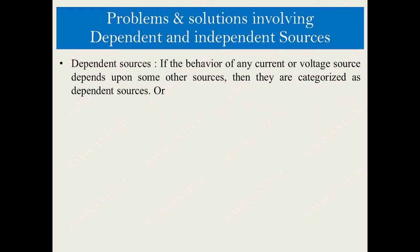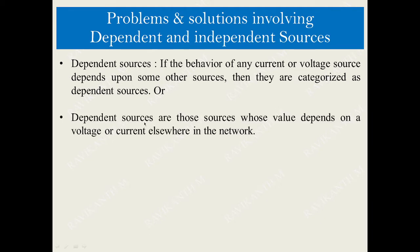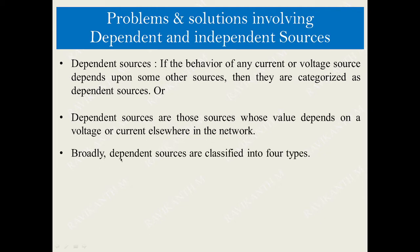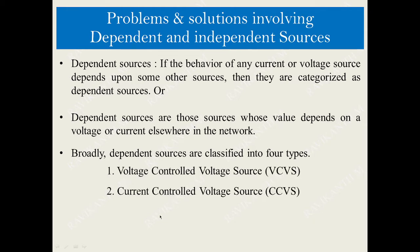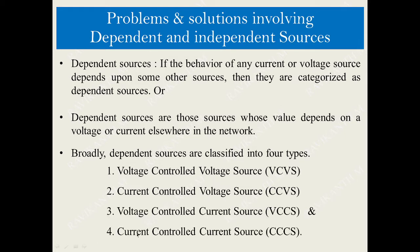Dependent sources: if the behavior of any current or voltage source depends upon some other source, then they are categorized as dependent sources — those whose value depends on a voltage or current elsewhere in the network. Broadly, dependent sources are classified into four types: voltage controlled voltage source, current controlled voltage source, voltage controlled current source, and current controlled current source.